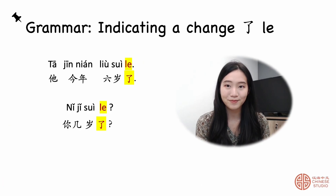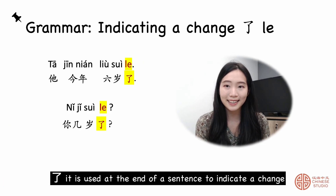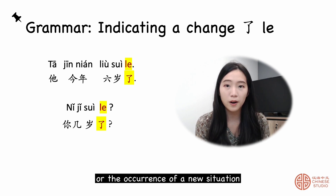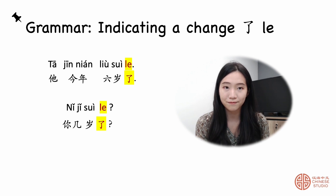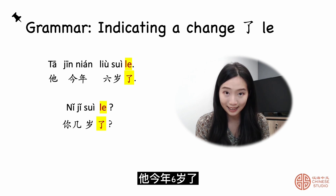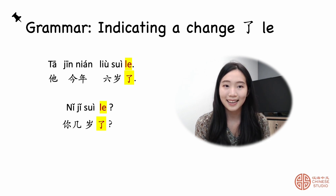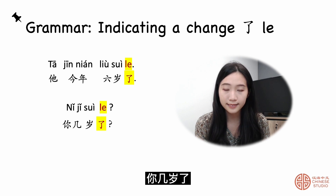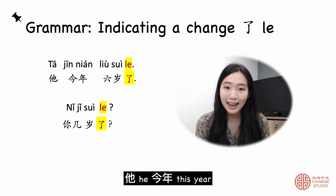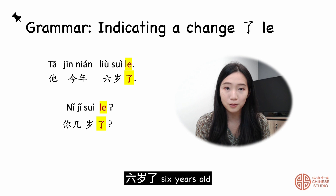Grammar point two: 了 (le). It is used at the end of a sentence to indicate a change or the occurrence of a new situation. For example: 你几岁了? 她今年六岁了 — she is six years old this year. 你几岁了 — how old are you?